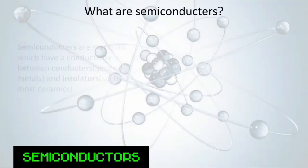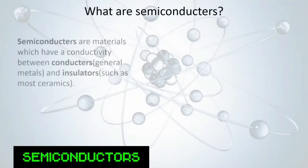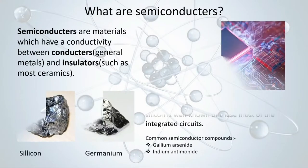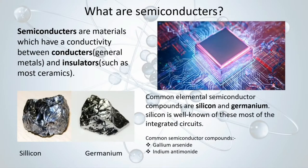What are semiconductors? Semiconductors are materials which have a conductivity between conductors, generally metals, and insulators such as most ceramics. Common elemental semiconductor compounds are silicon and germanium. Silicon is the most well-known, used in most integrated circuits. Other semiconductor compounds include gallium arsenide and indium antimonide.